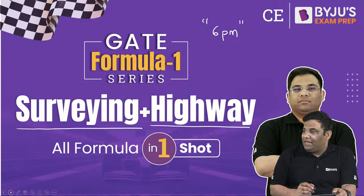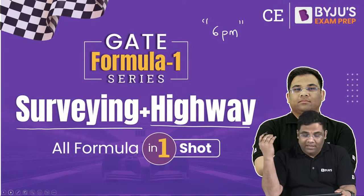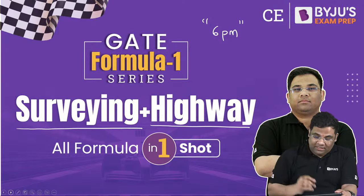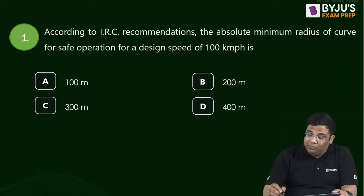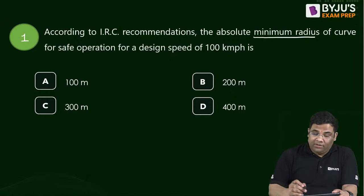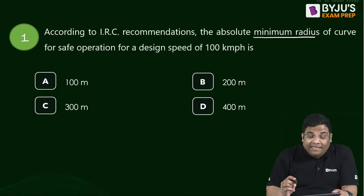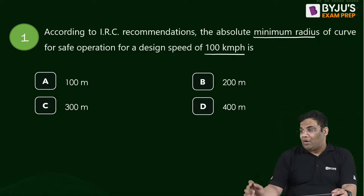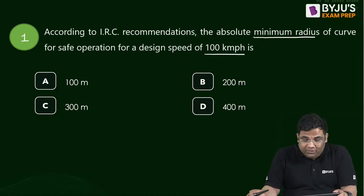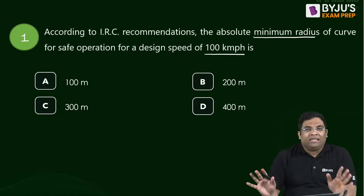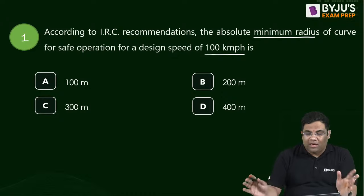Let us start the session without further delay. Welcome Saurabh Sri and Karthi. I request everyone to write the answer in the comment section. This is the first question: according to IRC recommendation, what is the absolute minimum radius of curve for safe operation at a design speed of 100 km/h? Please answer this question. You can use a calculator now — in the examination, calculators won't be allowed, but here at least for faster calculation you can.